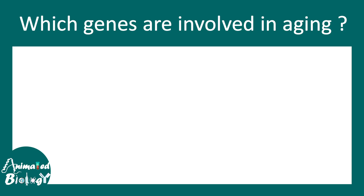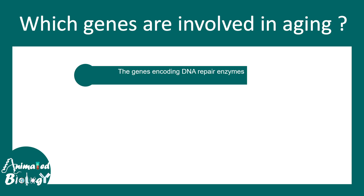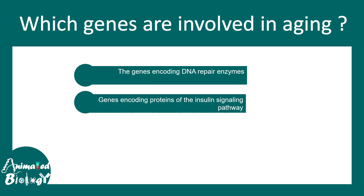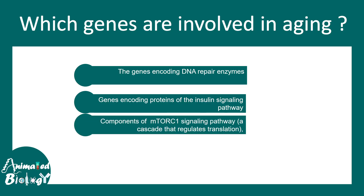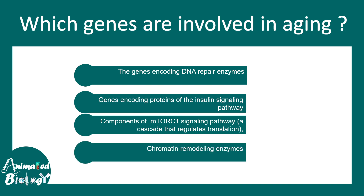Now let's talk about which genes are actually involved in the process of aging. The category of genes involved encodes for DNA repair enzymes, proteins in the insulin signaling pathway, components of the mTOR signaling pathway which regulates translation, anabolism and many other metabolic processes in our body, and also genes associated with chromatin remodeling enzymes. All of these categories of genes are associated with aging.